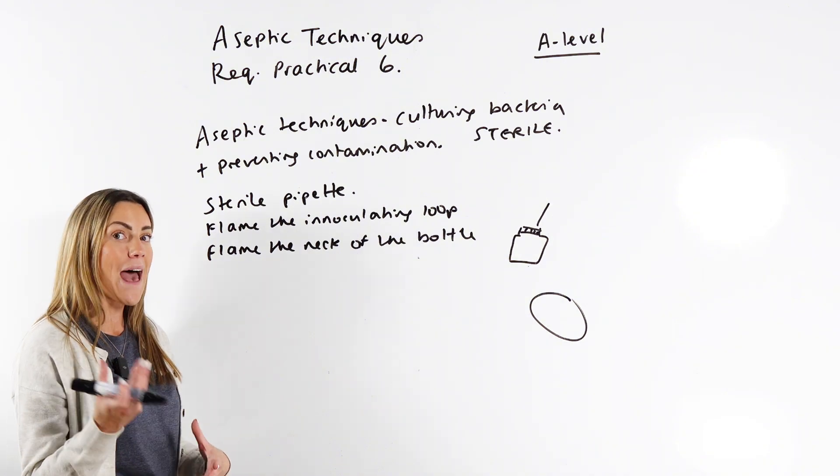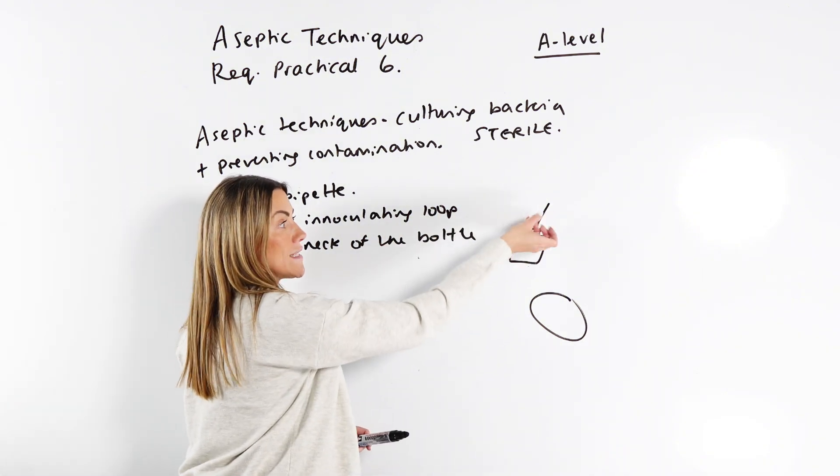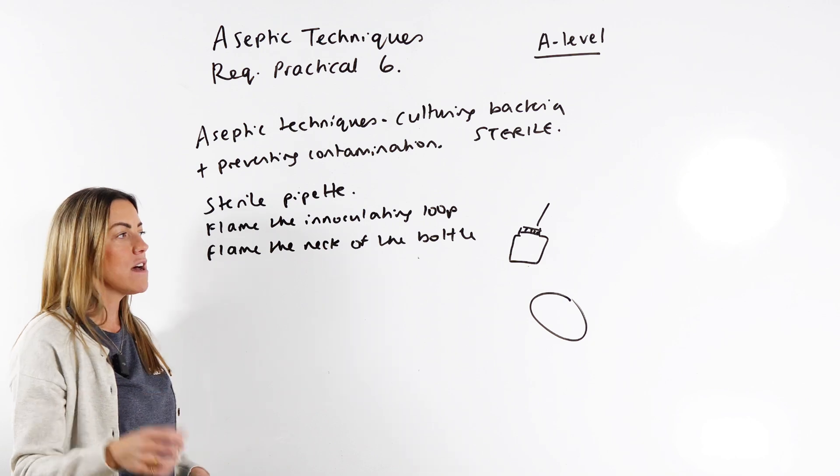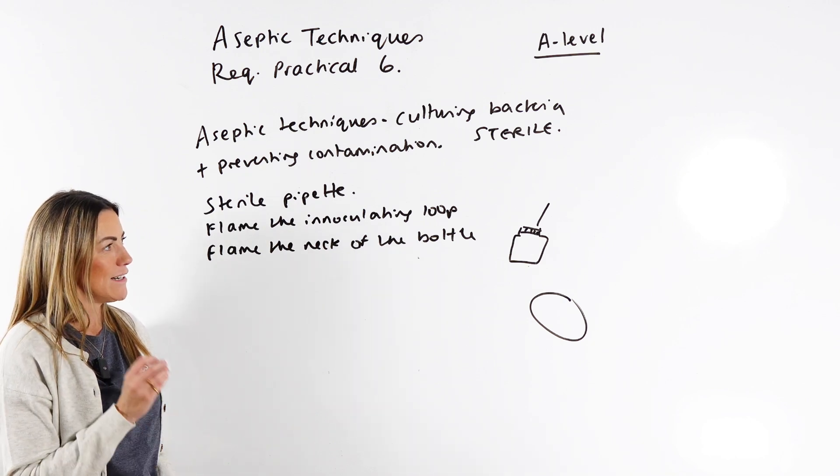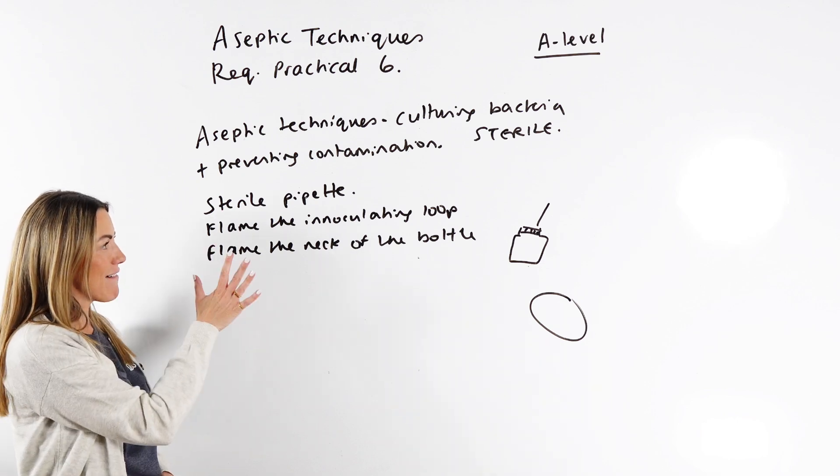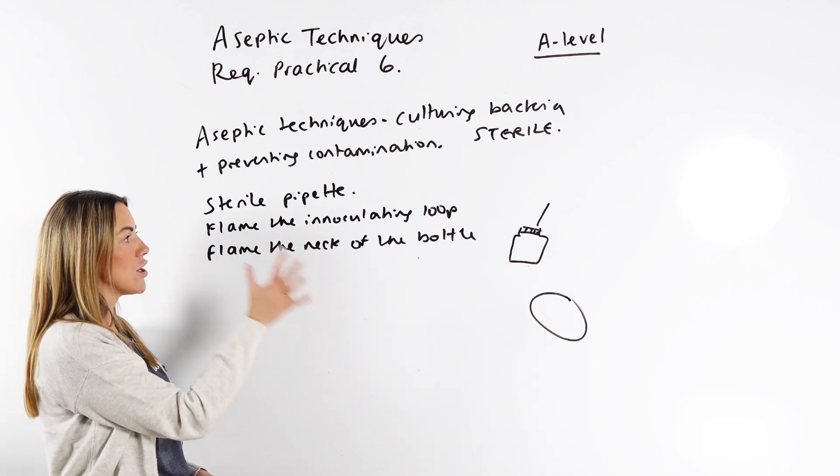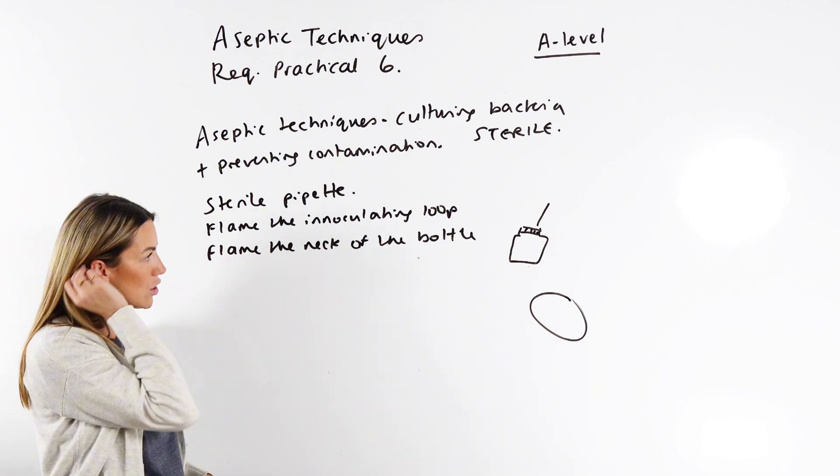Also the hot air from the Bunsen burner will force any contaminating bacteria away from that open bottle as well. What else do we need to talk about? Sterile pipette or flame your inoculating loop, flame the neck of the bottle.